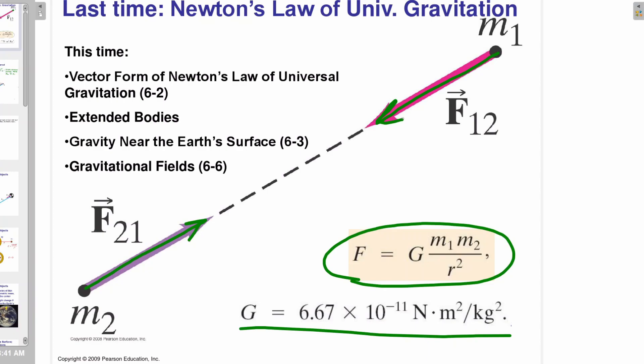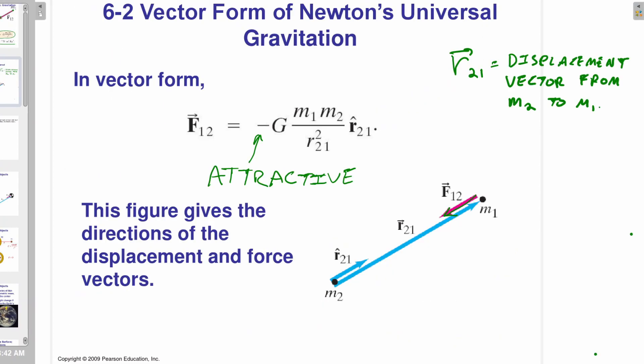Now this time we're going to get a little more precise and talk about Newton's law in its vector form. We're going to talk about extended bodies — M1 and M2 here are point masses. Then we'll talk about gravity near the Earth's surface, or little g, and what affects it. And we'll talk about gravitational fields. Fields are a really important concept in physics. This is just the first time you'll be introduced to a field, but they will come up again and again in physics one, two, and three.